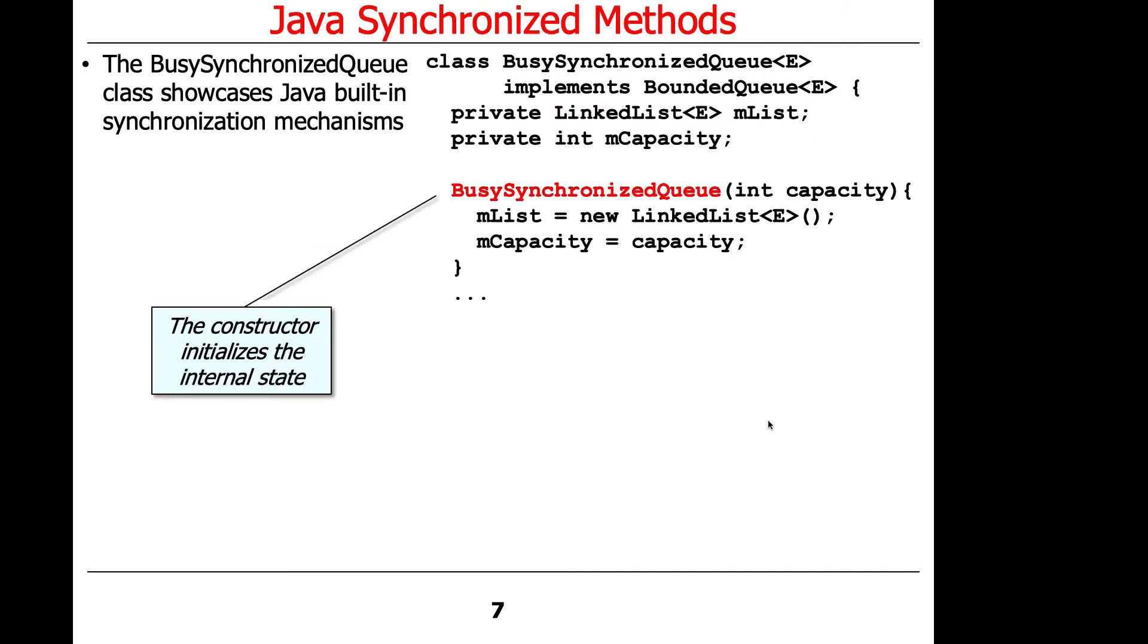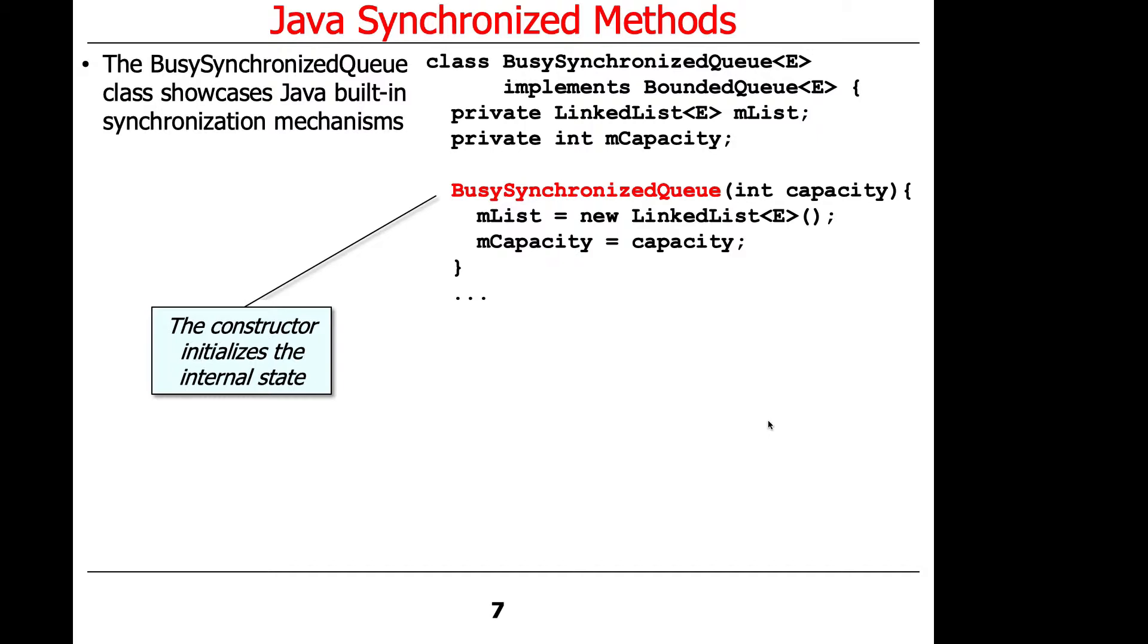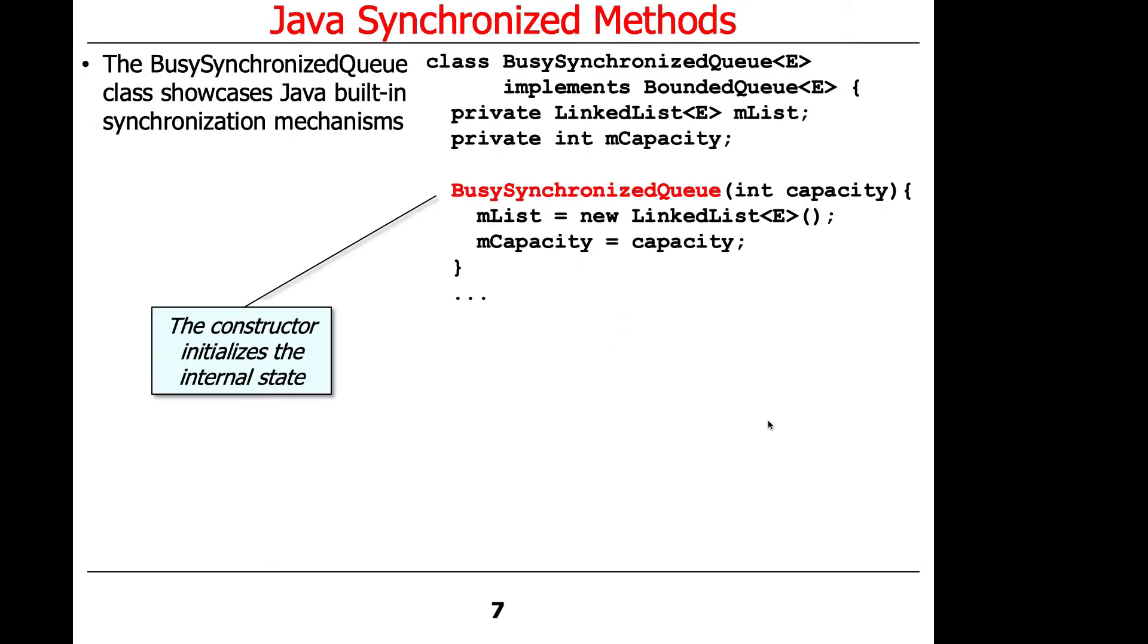So as we'll see, the constructor is going to take in the capacity, and we're going to go ahead and make a new linked list, and it's going to have a max size capacity here. I could also use an array blocking queue, I just use a linked list here.